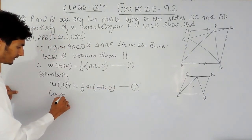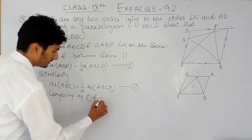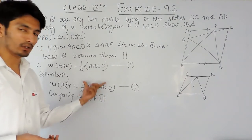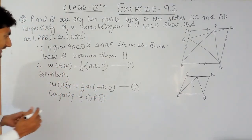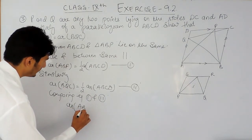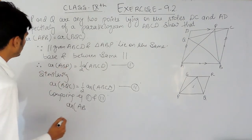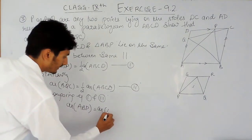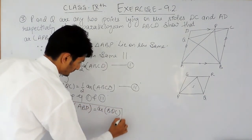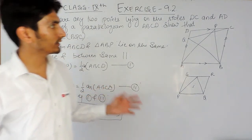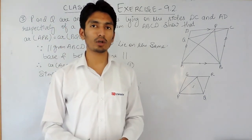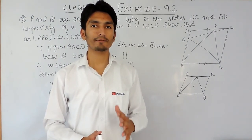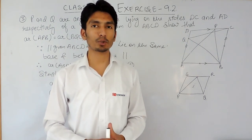Comparing equation one and equation two, in both cases the right-hand side is equal — both are half the area of parallelogram ABCD — which means the left-hand sides must also be equal. So we can directly write that the area of triangle ABP is equal to the area of triangle BQC. That's how you solve this question. If you like this video, please subscribe to our channel. For any problems in math, our phone number, email address, and WhatsApp number are given below in the description. Thank you.